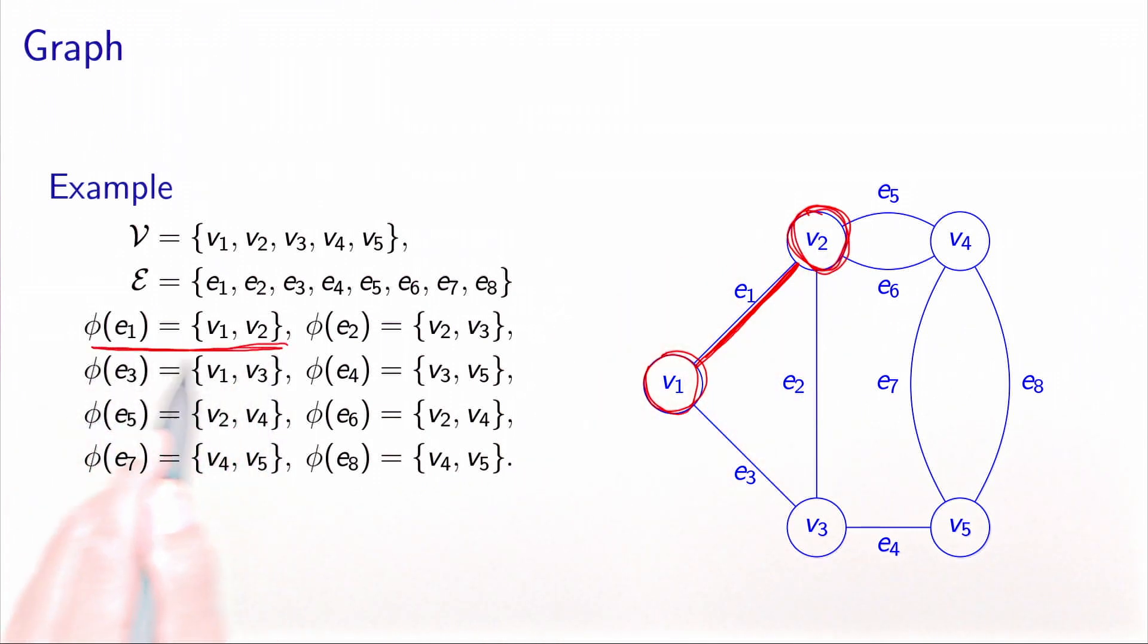the edge e1 is incident to the vertices v1 and v2. If we take the edge e7, it is incident to the vertices v4 and v5. And so on. This completely characterizes the graph.